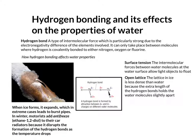Another feature of an open lattice is that when ice forms, it actually expands in volume relative to the water from which it came. So in extreme cases, if that water is contained within pipes, it can cause them to burst, as you can see from the picture.